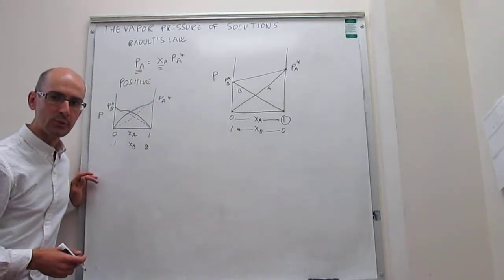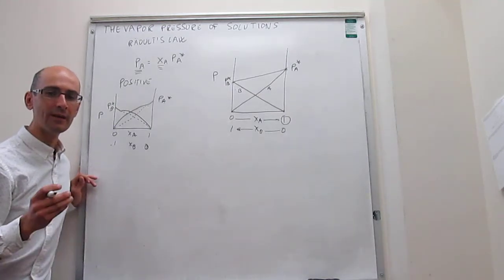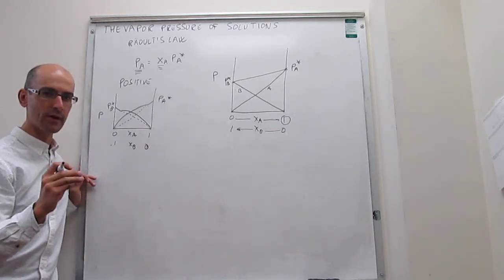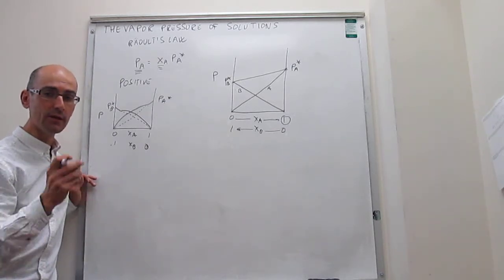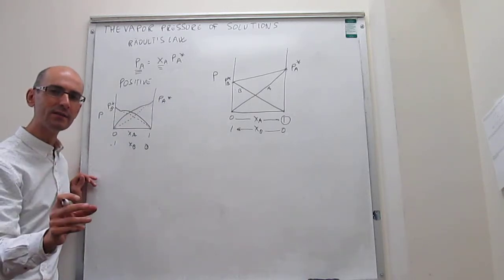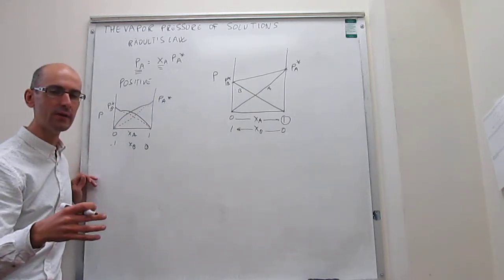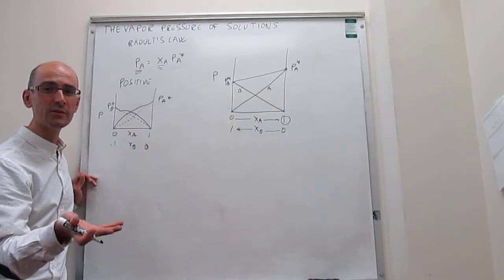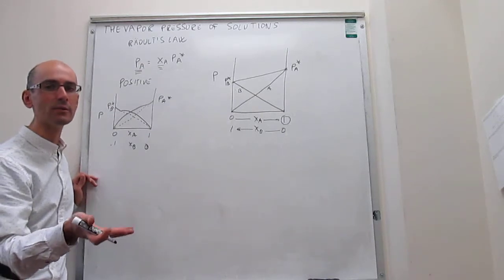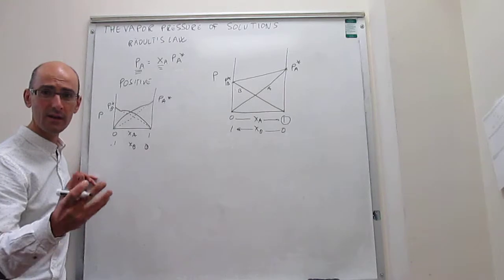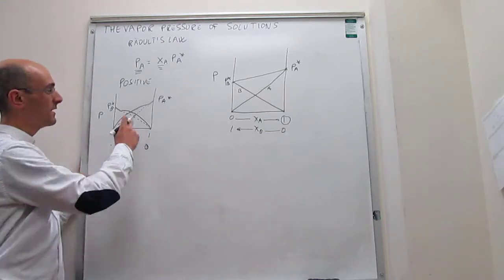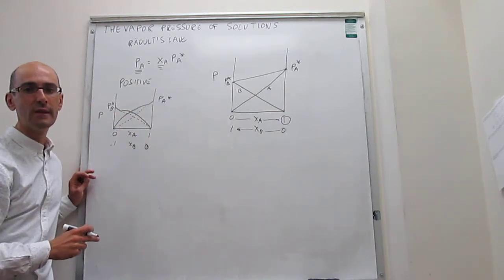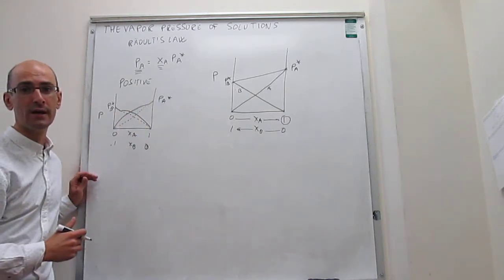Under what conditions do you observe a positive deviation? If the interactions of A with B are not as favorable as the interactions of A with A and B with B, then there's very low tendency for A and B to be together, and they would rather be in the gas phase where they don't need to interact. When the interactions of A with B are less favorable, there's an increased tendency for A and B to go into the gas phase, so the pressure you measure is slightly higher than expected.